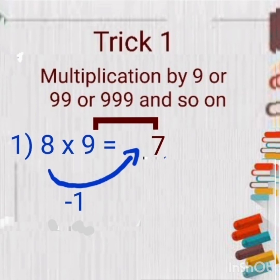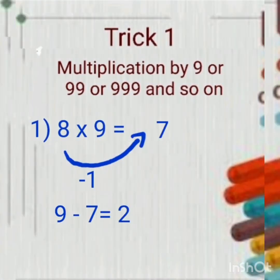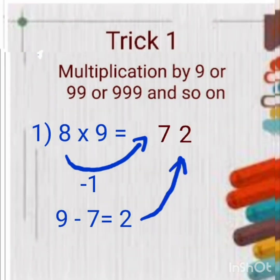Now you will subtract this 9 minus 7, and you will get 2. Just write 2 at once please. So here we have got our answer, 72.